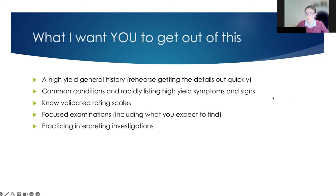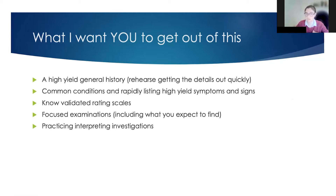What I want you to get out of this: a high-yield general history — rehearse the steps you need to go through for a history of a patient with a multi-system disease under the time constraints of a viva. Have a look at common conditions and how to elicit high-yield symptoms and signs, both for history and examination. Validated rating scales — like NYHA for a cardiac history — are really high yield. Focused examination and practice interpreting investigations are also key.